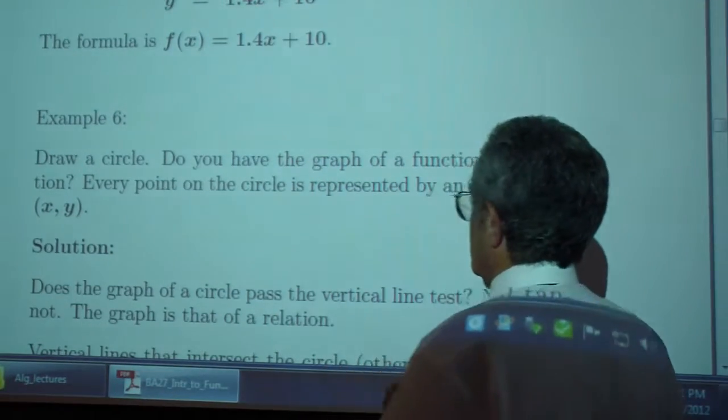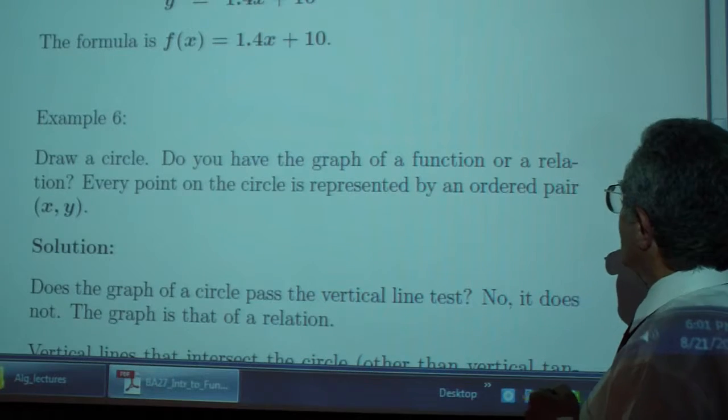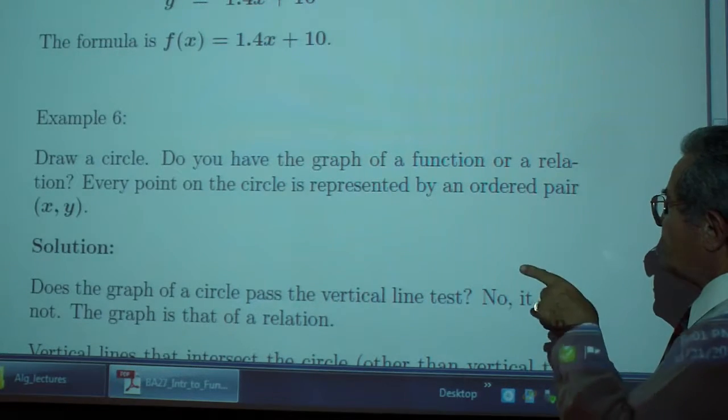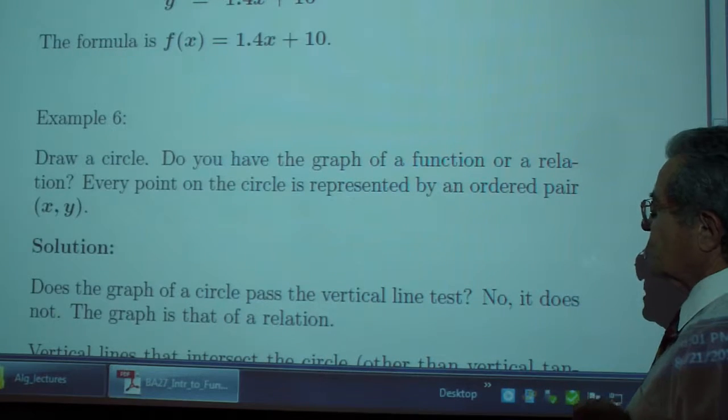Example 6. Draw a circle. Do you have the graph of a function or a relation? Every point of the circle is represented by an ordered pair.